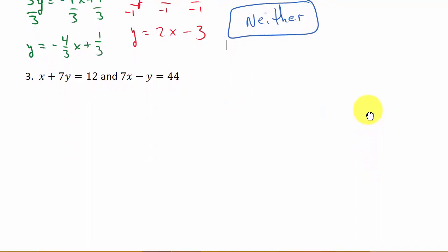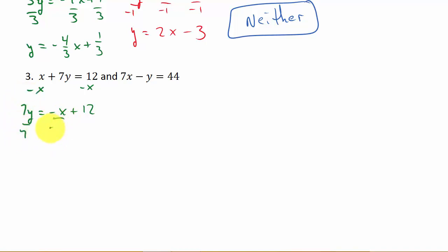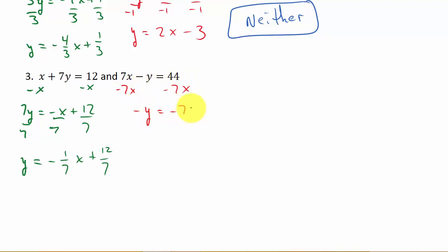Now let's look at our last example — you can probably guess these are going to be perpendicular, but let's see how we get it. I'll subtract x from both sides to get 7y equals negative x plus 12, then divide each term by 7, giving y equals negative 1 seventh x plus 12 over 7. For the second equation, I'll subtract 7x from both sides to get negative y equals negative 7x plus 44, then divide by negative 1, giving y equals 7x minus 44.